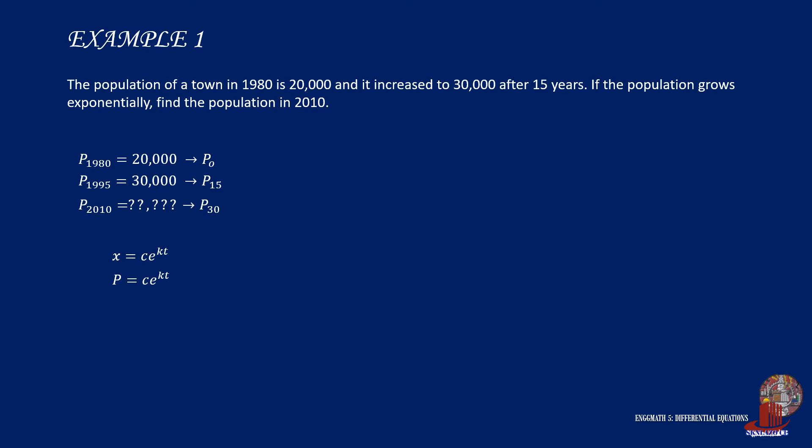Now let's attempt to determine the values of the other parameters. Initially, or at time equal to 0, the population was 20,000. Plug the values into the equation where again k multiplied by t, which is 0, will be 0, and e raised to 0 is just 1. So c is equal to 20,000.